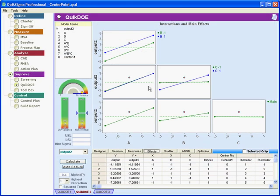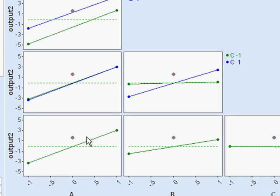You can begin to visualize what's going on by looking at these effects plots. Here we have the effect of variable A, and here's the center point. It's right at the midpoint, and the question is, is that far enough away from the line to indicate curvature?